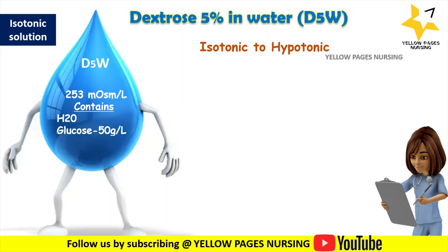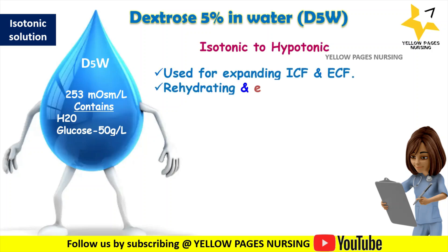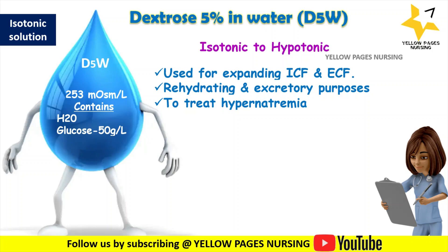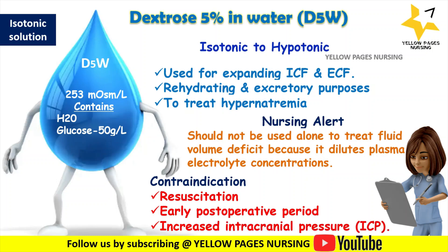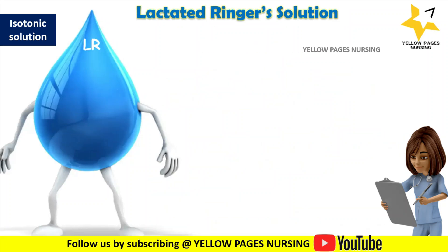D5W is mainly used for expanding extracellular and intracellular fluid and is helpful for rehydrating and excretory purposes. It is also used to treat hypernatremia. Nursing alert: D5W should not be used alone when treating fluid volume deficit because it dilutes plasma electrolyte concentrations. It is contraindicated in resuscitation, the early postoperative period, and in patients with known or suspected increased intracranial pressure.